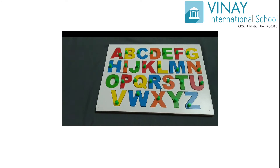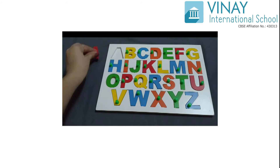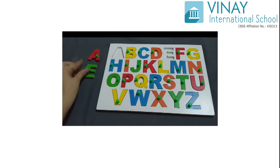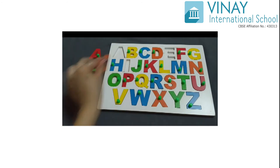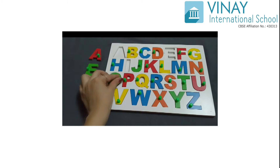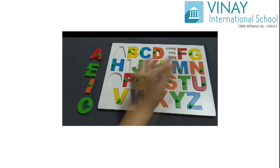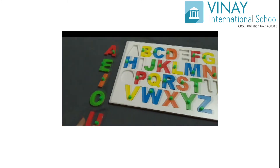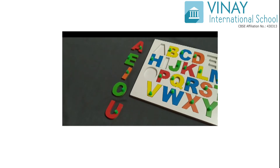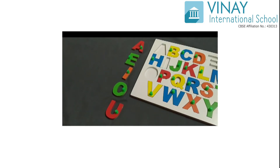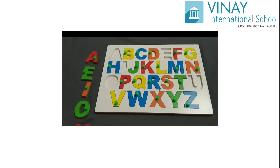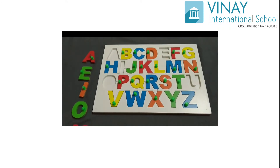There are 5 vowels in an English Alphabet, that is A, E, I, O and U. These are the 5 vowels. और बाकी के जो Alphabets बचते हैं वो सब Consonants हैं — मतलब 26 letters में से 5 vowels हैं, तो बाकी के 21 letters जो हैं वो सब Consonants हैं।